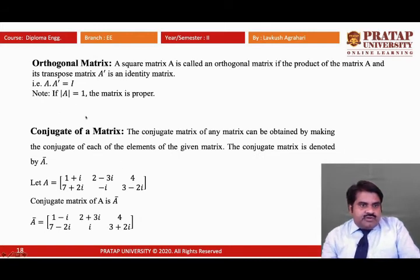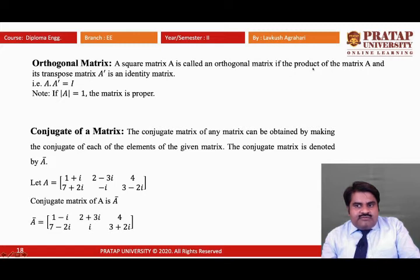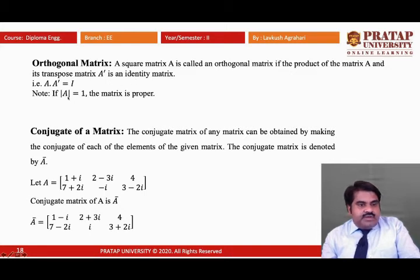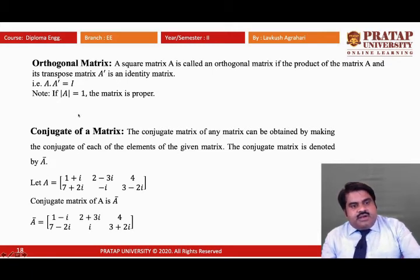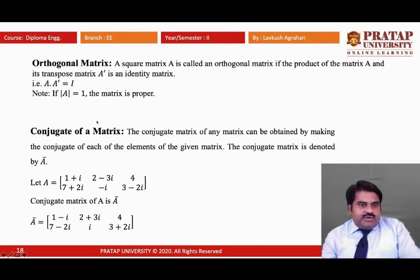Now, the orthogonal matrix. A square matrix A is called an orthogonal matrix if the product of the matrix A and its transpose A' is an identity matrix. For example, if we multiply a matrix with its transpose and obtain an identity matrix, the matrix is called an orthogonal matrix.